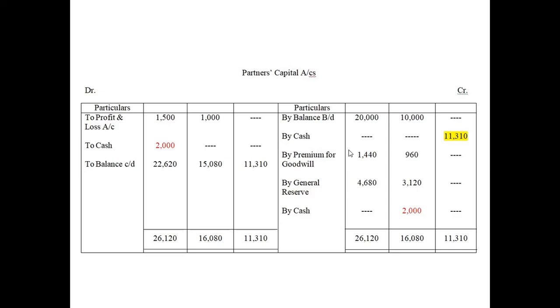We also have a general reserve of 7,800 in the balance sheet, which will be shared between A and B as per the old profit-sharing ratio. Just write the amount here.